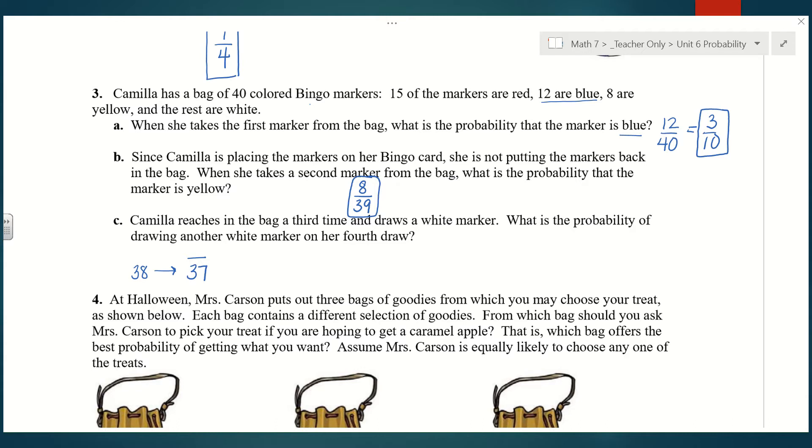We need to figure out how many white were in the bag. If I add 15 plus 12, that's 27. 27 plus the 8 yellow is 35. So if there were 40 total, that means there must be 5 that are white. Now it says she drew a white marker on that third draw. Technically, the probability before would have been 5 out of 38 because there were 5 white markers out of the 38. But now, if she's hanging on to that white marker, there's only 4 left in the bag out of 37. So that's the chance she gets another white marker on the fourth draw.